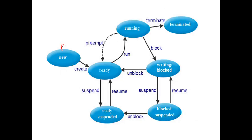Another possibility: process P4 comes from the new state to the ready state and is moved to the running state. P4 is assigned only two minutes to use the CPU. There are scheduling algorithms where processes are assigned a specific time. Also, if a higher priority process arrives, the CPU will be taken away from the lower priority process and given to the higher priority process.